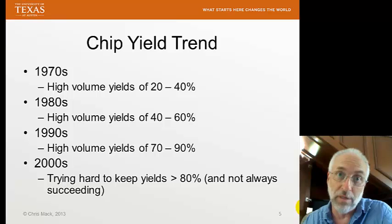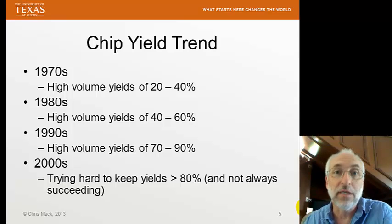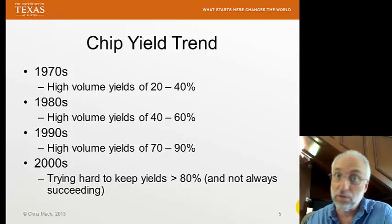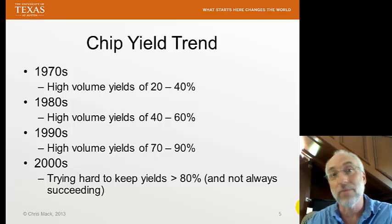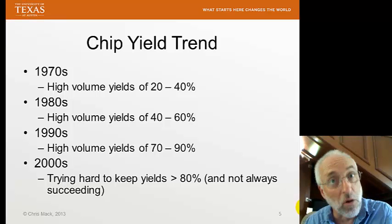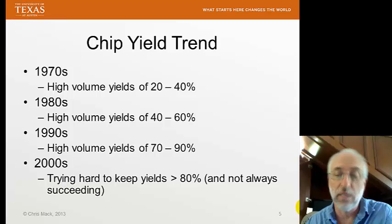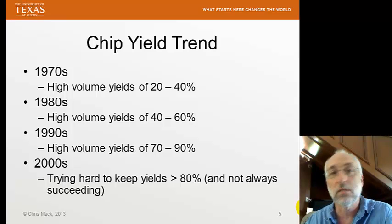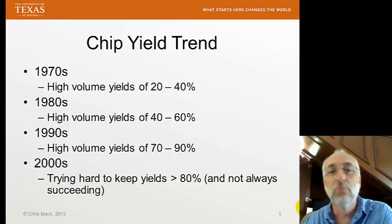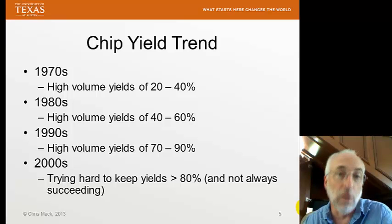Here's the problem, though. Once you hit 80 to 90 percent yield, there's not much room for improvement anymore — you certainly can't double it. Going from 80 to 90 percent yield is only a small improvement in cost, not a big improvement. Today, the goal is to keep our yields high as we introduce newer processes, which is very hard to do. There's no more room for improvement in terms of lowering cost by increasing yield.